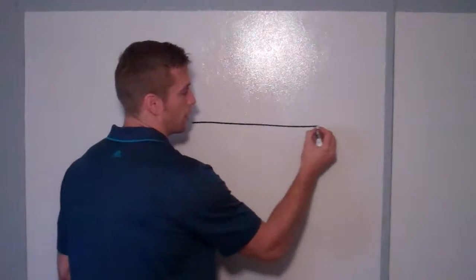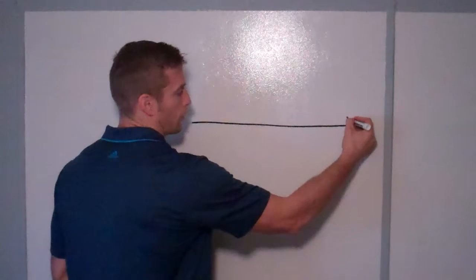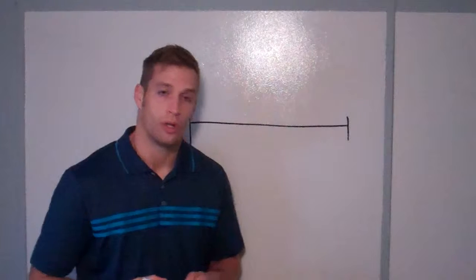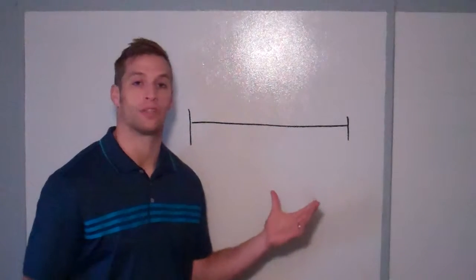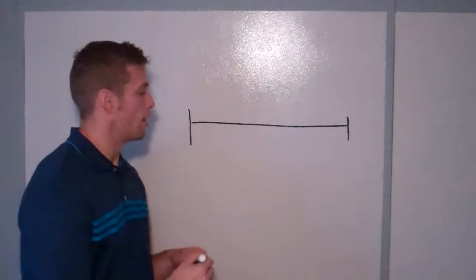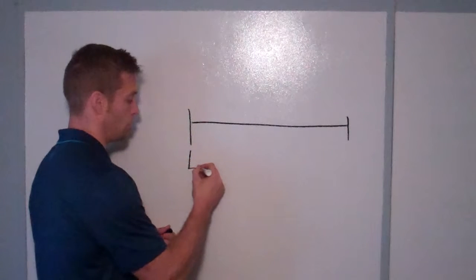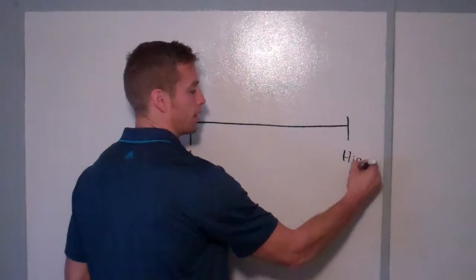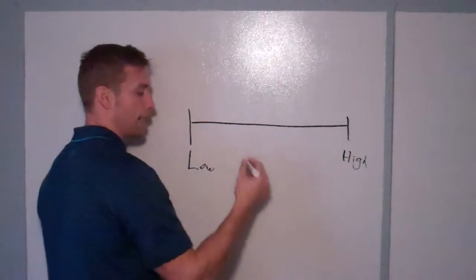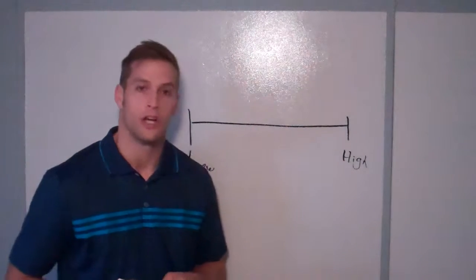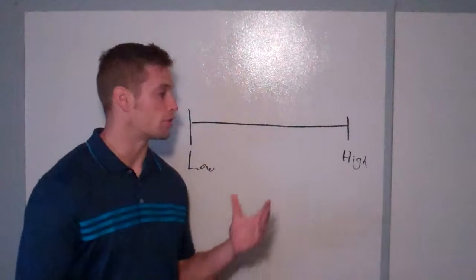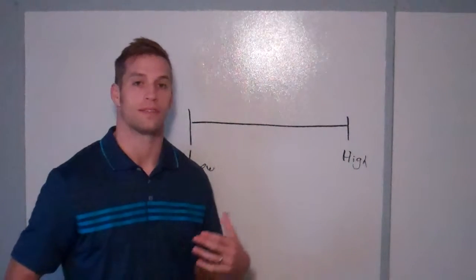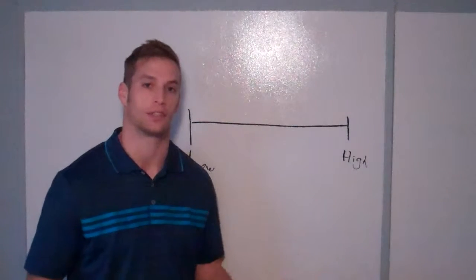If this is our range here, whenever you have blood work done, you have a range of values with a low end and a high end. As long as you fall within high and low in mainstream medicine, you're normal. You'll see on your lab test there's a reference range with a high and a low, and as long as you're inside that, your doctor says you're normal.